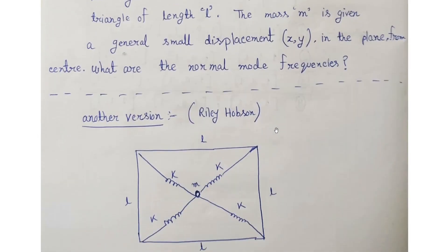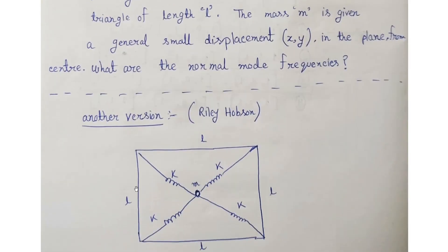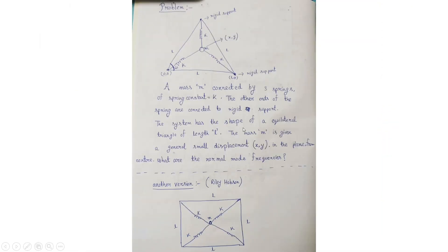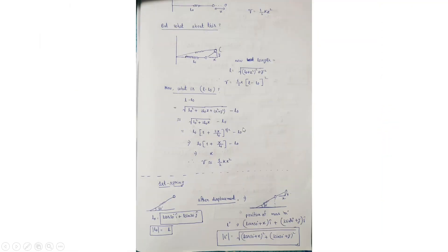There is another version of this problem where the triangle is replaced by a square. That problem is actually from Riley & Hobson's mathematical physics book — the problem is given there and the answer is also given, but the solution is not. So you can give it a try later. Now let's look at the solution step by step.